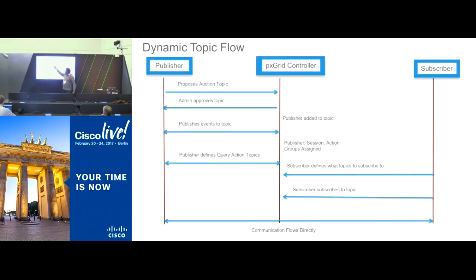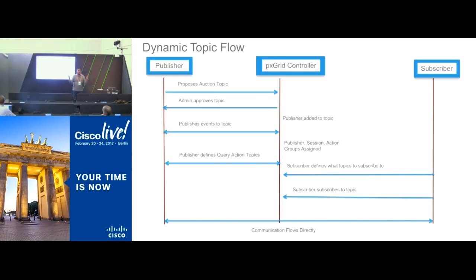The publisher, in this case eBay, wants to create an auction topic. The topic goes to the PXGrid controller and the ISE system manager, and the administrator approves the topic. The moment the topic is approved, it gets discovered on the PXGrid network, and in this case the buyers and watchers come to know that there is an auction or inventory topic available.